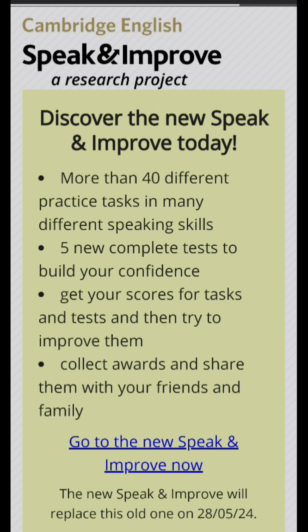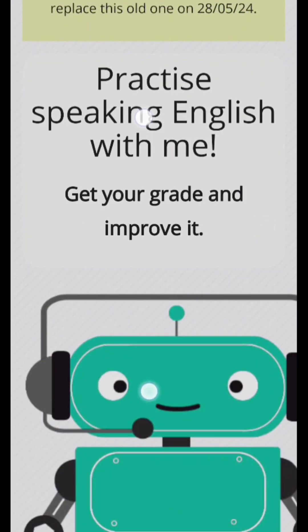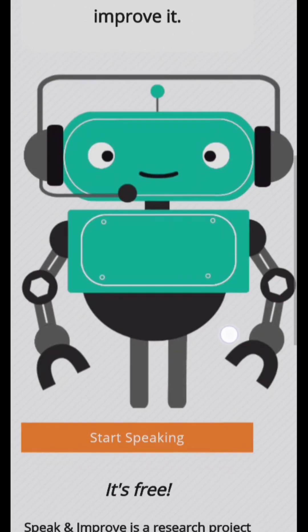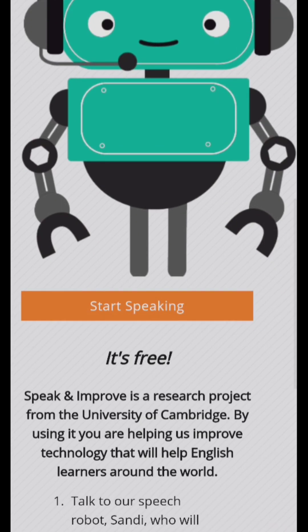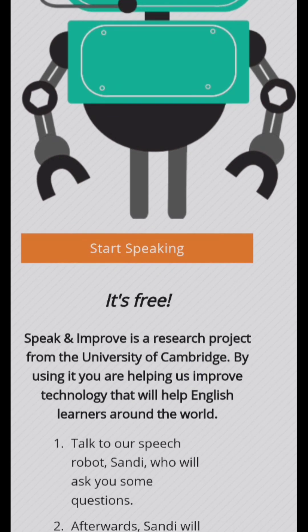Once you click on it, you can see the home page. Just scroll down and you can see the robot or AI that you are going to practice with. There is an option: 'Start Speaking' — and it's of course free.